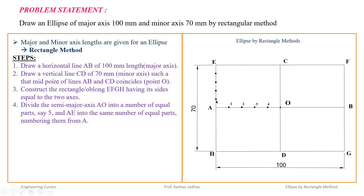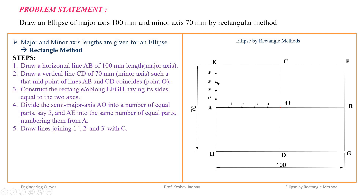Give the numbering starting from A towards E: 1 dash, 2 dash, 3 dash, 4 dash. Then draw lines joining points 1 dash, 2 dash, 3 dash, 4 dash with point C.